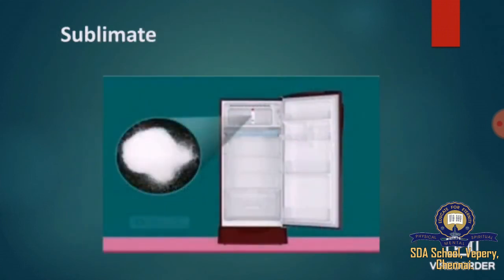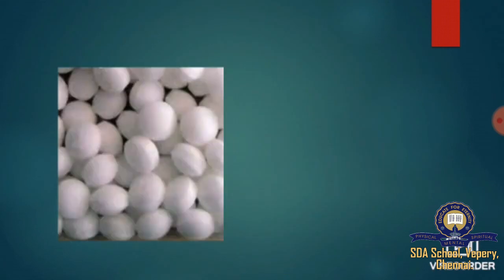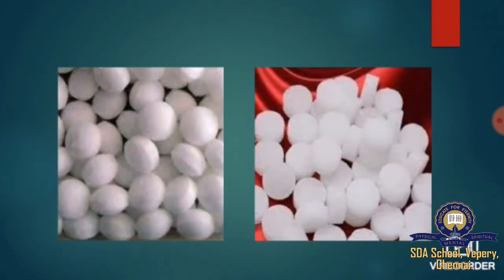When the vapor of such substances is cooled, it directly solidifies, and the solid that is obtained is called the sublimate. Examples include naphthalene balls and camphor, which can sublime at room temperature.